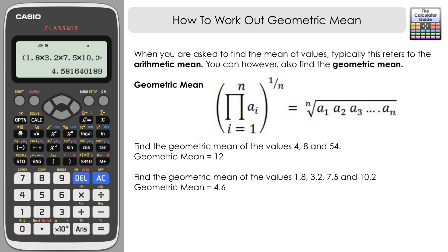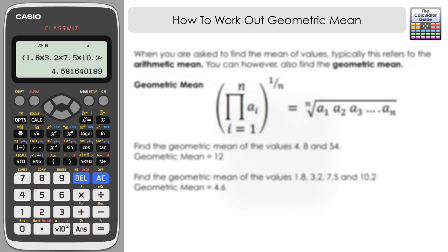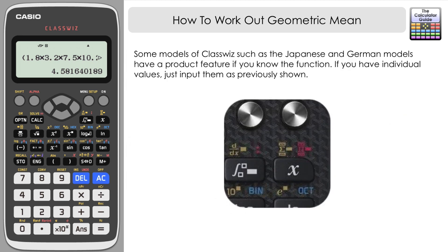Now I mentioned before that there wasn't a function as such to work this out on the ClassWiz. On some models of ClassWiz such as the Japanese and the German edition there is a product feature. It is an alpha feature.